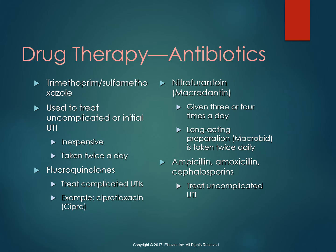Here are those drugs. Trimethoprim-sulfamethoxazole, brand name Bactrim, is commonly used for uncomplicated or first-time UTI because it's relatively inexpensive and only needs to be taken twice a day, giving better patient follow-through to complete the course. A disadvantage of Bactrim, which is becoming an increasing problem, is that we have seen some E. coli resistance to it.